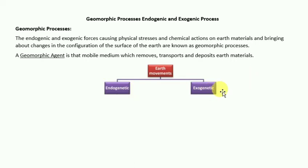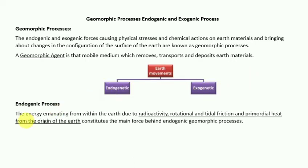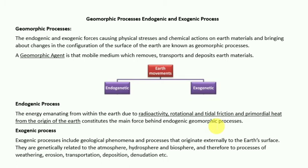In endogenic processes, the energy emanating from within the earth — due to radioactivity, rotational and tidal friction, and primordial heat from the origin of the earth — constitutes the main force. In exogenic processes, the processes originate externally to the earth's surface.